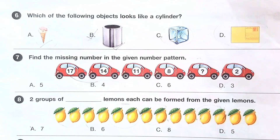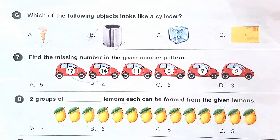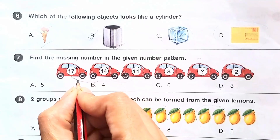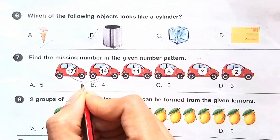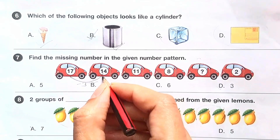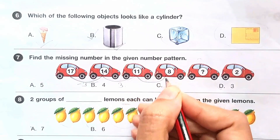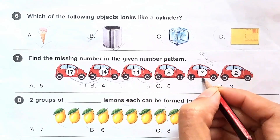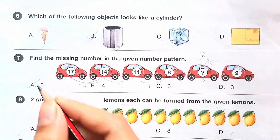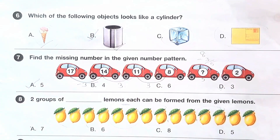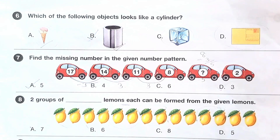Question number 8: find the missing number in the given number pattern. Let us see the difference between these — it is minus 3. So the answer is option A.